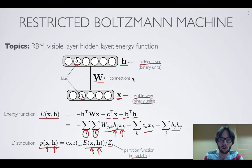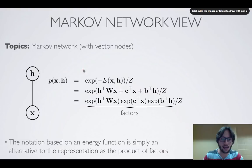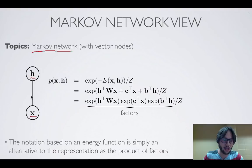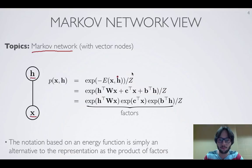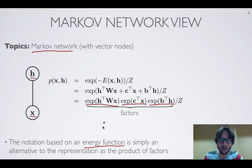We can represent the RBM as a Markov network. Using nodes for the vectors x and h, we have a single edge between them because they share a factor. The distribution P(x, h) equals the exponential of minus the energy, and because the sum of an exponential of a sum is the product of exponentials, this translates into a product of factors. The energy-function notation is simply an alternative way of representing a product of factors by taking the exponential of minus the energy.